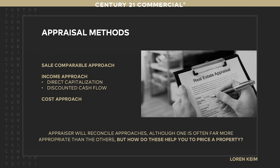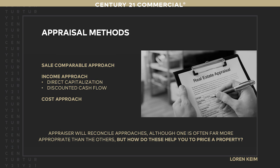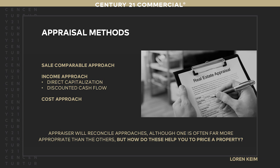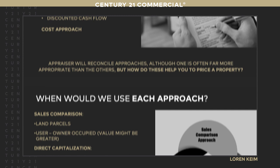Everybody knows what an appraisal is. There are three ways we do one: sales comparison approach, income approach, and cost approach. An appraiser does all three on every commercial property and reconciles them, giving different weights to each. We want to know which is most appropriate for whatever we're pricing. For income approach, there are two methods we typically use: direct capitalization — pricing by cap rate — and discounted cash flow, used for non-stabilized properties.